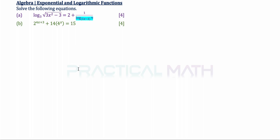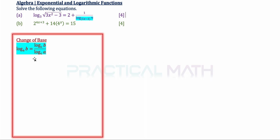For part A, we are to solve these logarithmic equations. On the left-hand side, the log has a base of 3, but on the right-hand side, we have a log in the denominator with a base of 3x minus 3. So they are of different bases. When you have an equation with two logs of different bases, we want to change them to the same base.